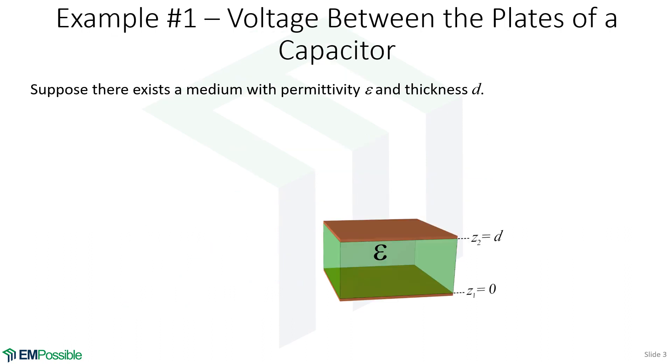Here is our example. We have a parallel plate capacitor, although it could just as easily be a parallel plate resistor, and it's got a top plate, it has a bottom plate, and it is separated by a medium with permittivity epsilon. And notice the thickness of that medium between the plates is d.